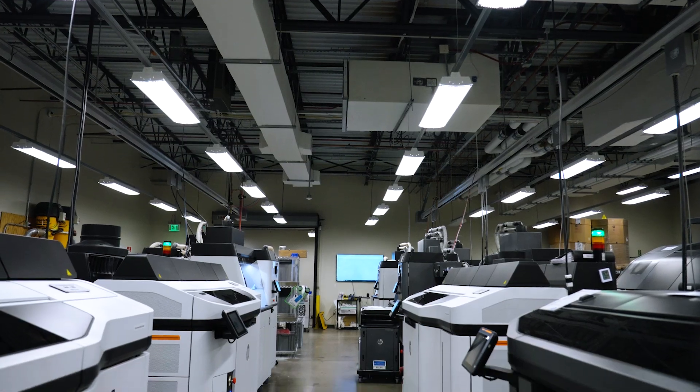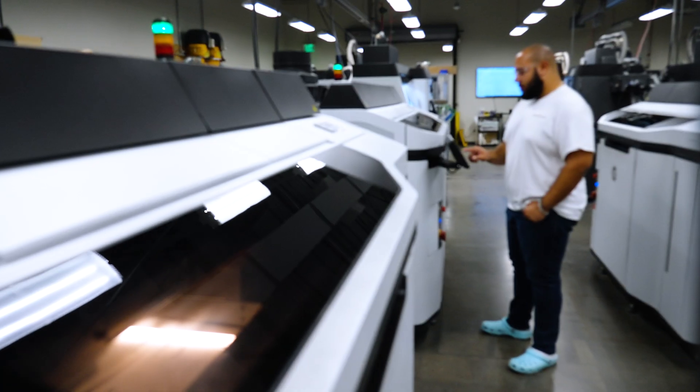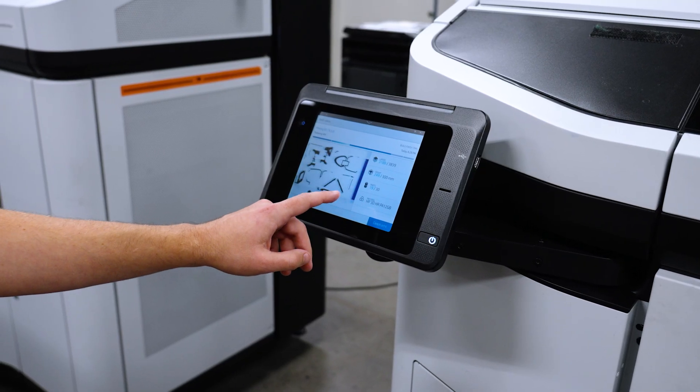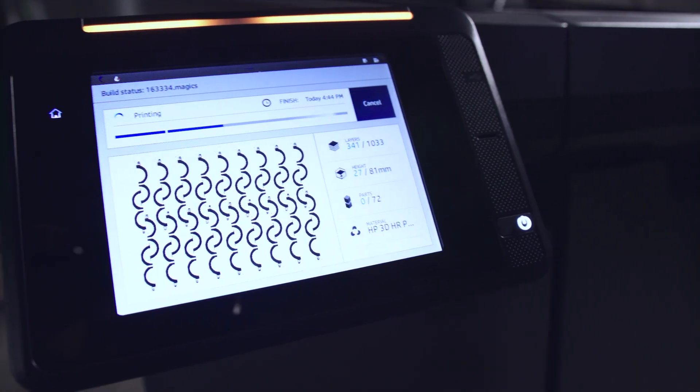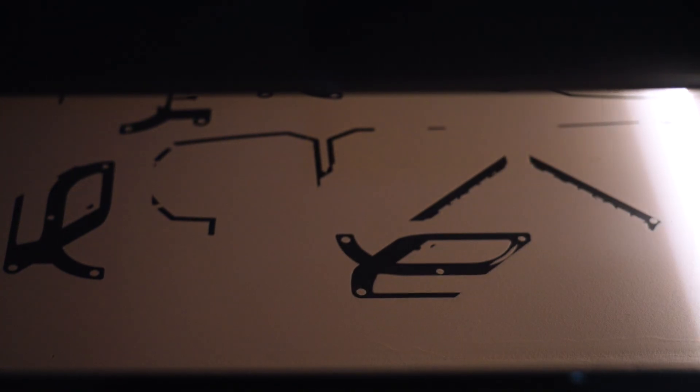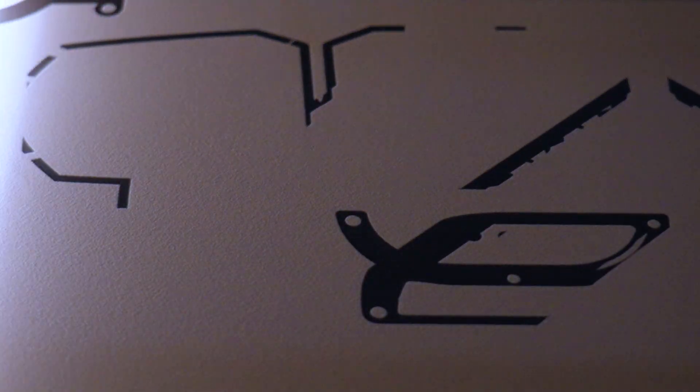Our MultiJet Fusion or MJF printers are capable of accelerated build speeds when compared to other powder-based additive manufacturing technologies. MJF is a production-grade additive technology developed by HP. The process builds nylon parts by applying fusing and detailing agents to the powder bed, and then solidifies the parts with a heating element. This results in faster build speeds, more cost-effective parts, and improved isotropic mechanical properties.